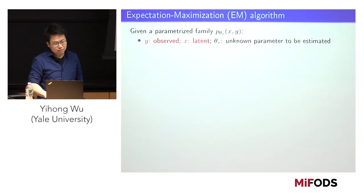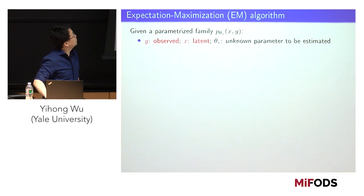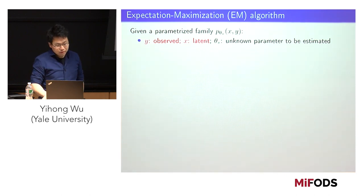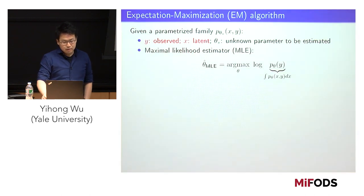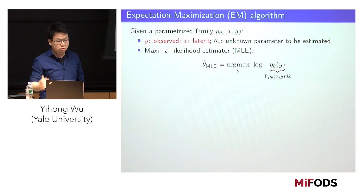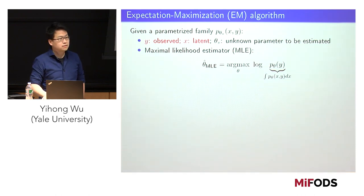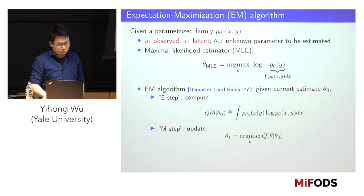I'll start with a quick recap of the EM algorithm. Suppose you have a statistical model for a latent variable X and observable Y, with unknown parameter theta star as ground truth. Observing Y, you want to learn something about theta star. Suppose you want to compute maximum likelihood, which entails maximizing the marginal law of Y over theta. In many situations, this is a non-convex optimization problem.